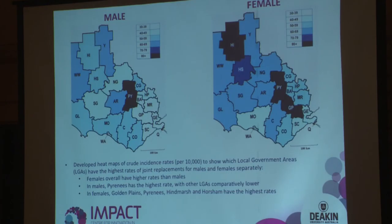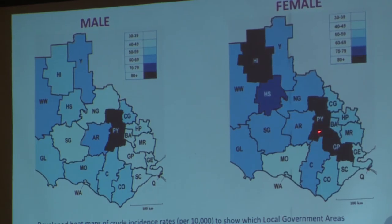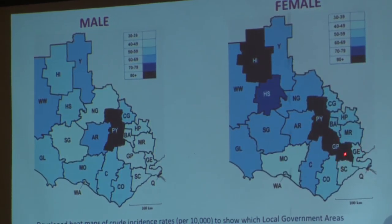Finally, looking quickly at the differences between men and women in the area — these are on the same scale — in general, females have higher amounts of joint replacements than men. For men, the highest amounts of joint replacements are in the Pyrenees area and also in Queenscliff. For women, it's still Pyrenees and Queenscliff, but there's also Golden Plains, which is quite close to Geelong, Horsham, and an area called Hindmarsh, which is another relatively remote area.